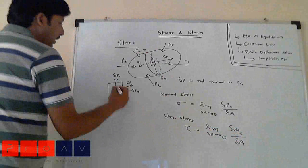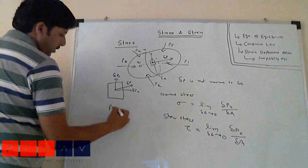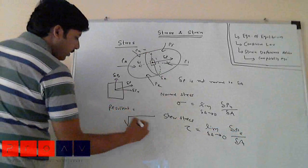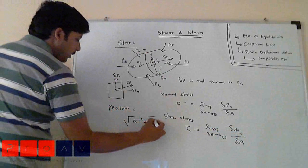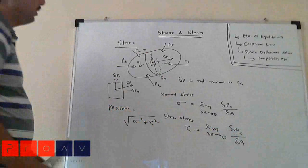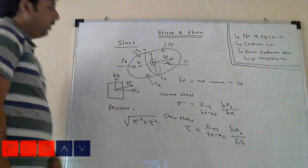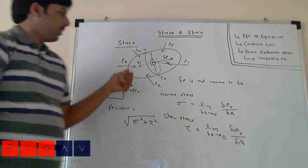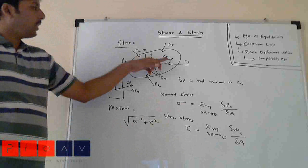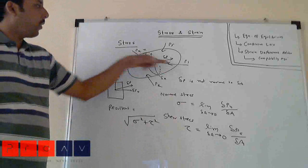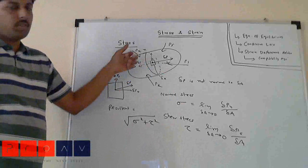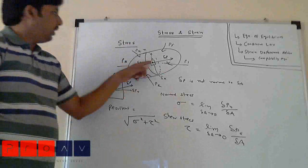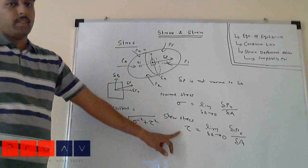So the resultant is given by the square root of sigma squared plus tau squared. It is the force divided by area, the stress. The force can be resolved into two components: normal force and tangential force. The normal component gives normal stress and the tangential component gives shear stress.